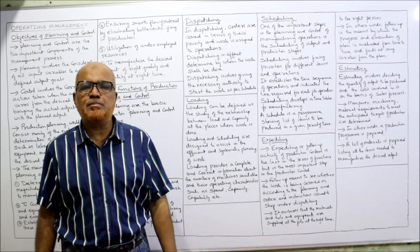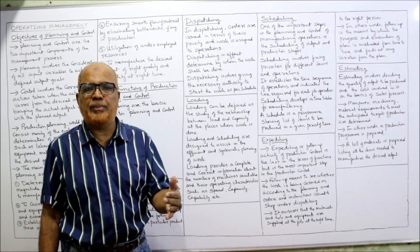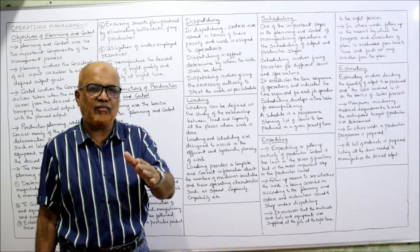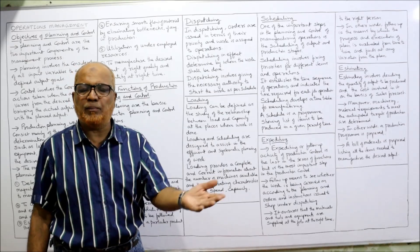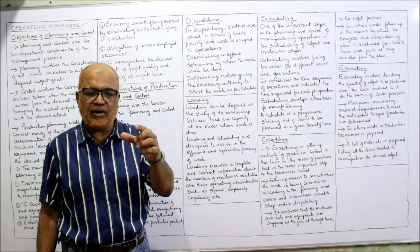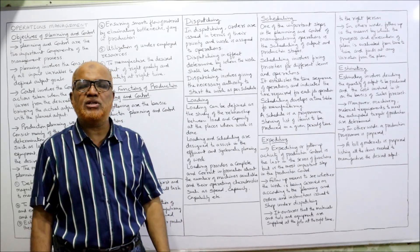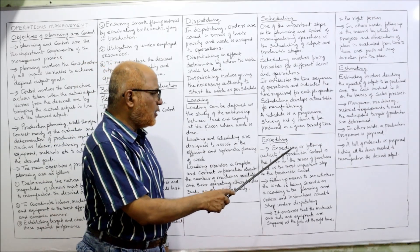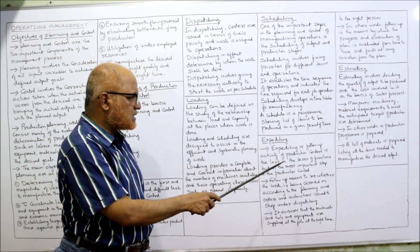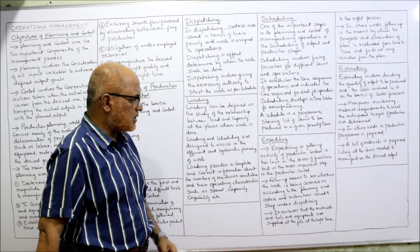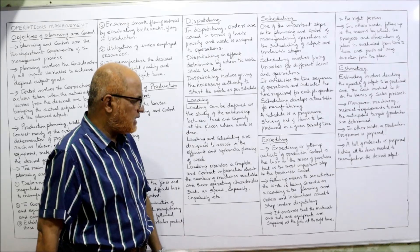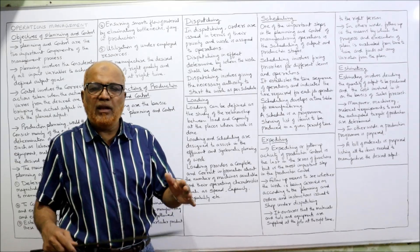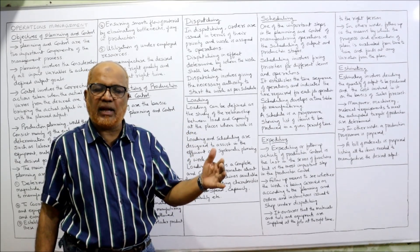Next is expediting. Expediting means follow-up — a procedure where we compare the actual production with the planned production to find out if any variations exist, so that corrective measures can be taken to remove those variations. Expediting or follow-up is the last in the series of functions but is the most important. Follow-up means seeing whether the work is being carried out according to plan or not.